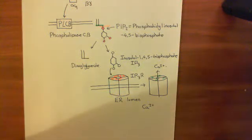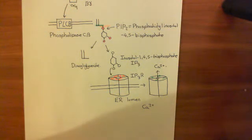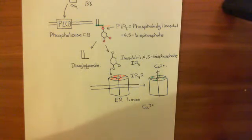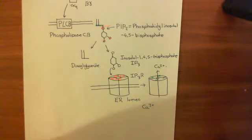Welcome to this next video on the metabotropic glutamate receptors and how they can produce calcium oscillations. Specifically, it's the metabotropic glutamate receptor 5 which can produce calcium oscillations.